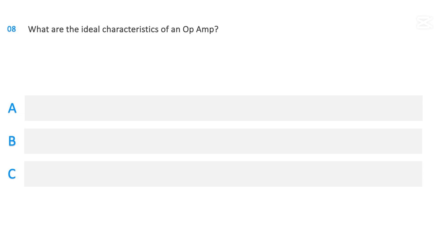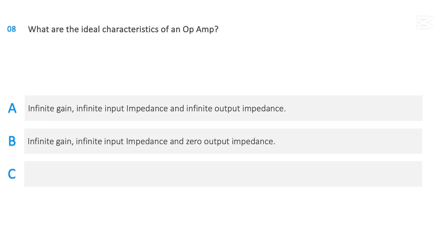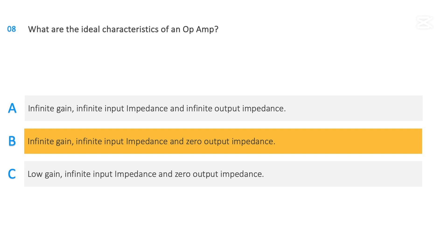What are the ideal characteristics of an op-amp? Infinite gain, infinite input impedance, and infinite output impedance. Infinite gain, infinite input impedance, and zero output impedance. Low gain, infinite input impedance, and zero output impedance. The correct answer is: infinite gain, infinite input impedance, and zero output impedance.